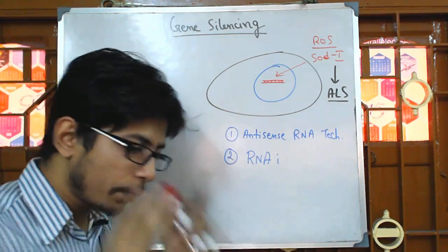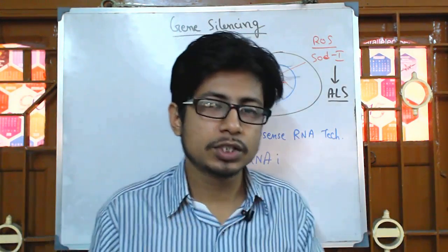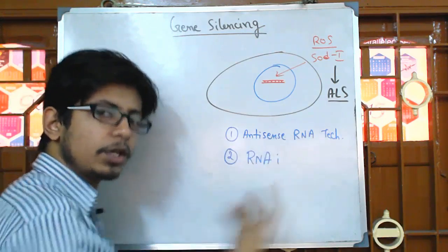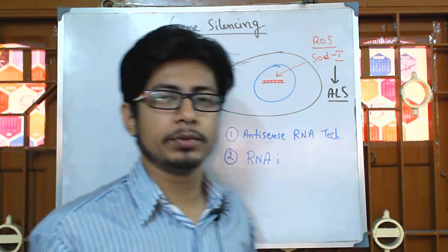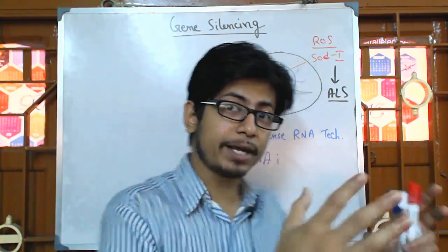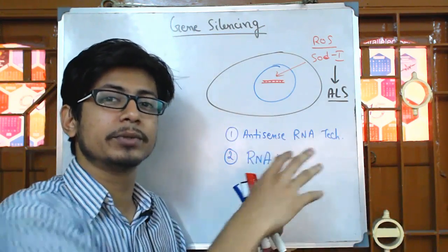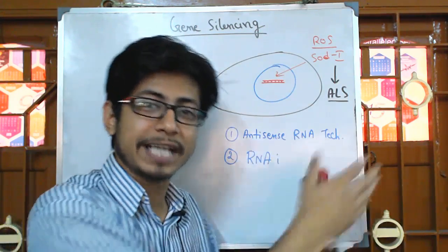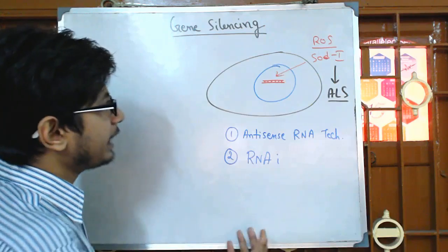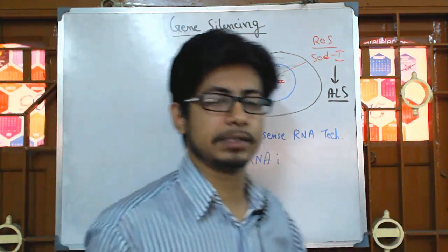There are two major purposes for going for gene silencing. First, sometimes to know the function of a gene — you can block its function or remove that gene to check what alteration of function in the cell occurs, to find out exactly what role that gene is playing. Second, to remove mutated genes or to cure some diseases.